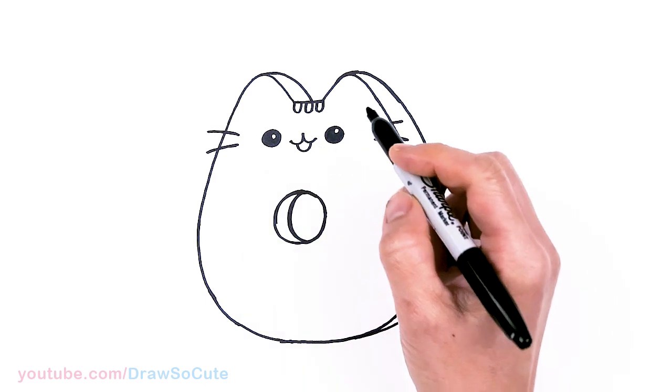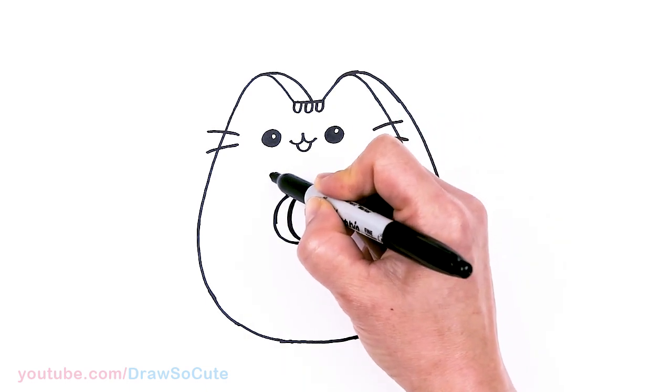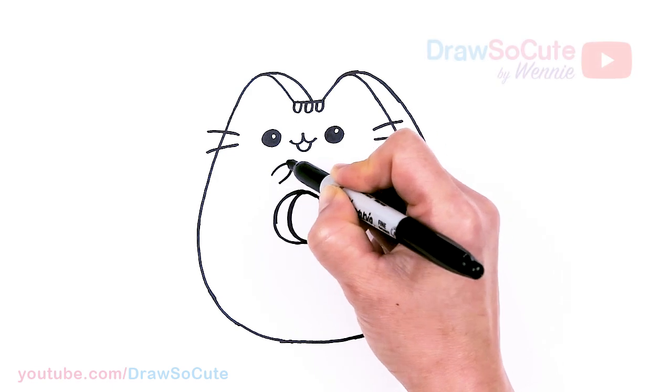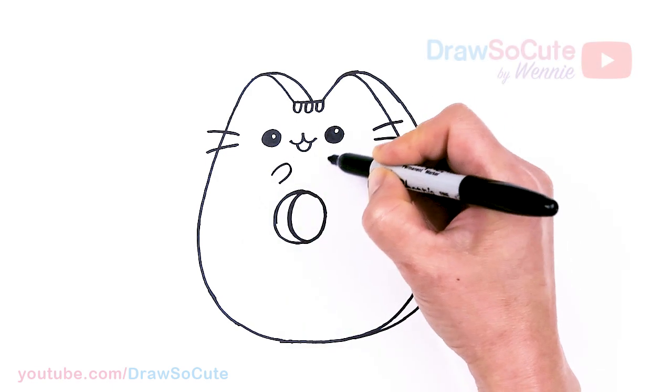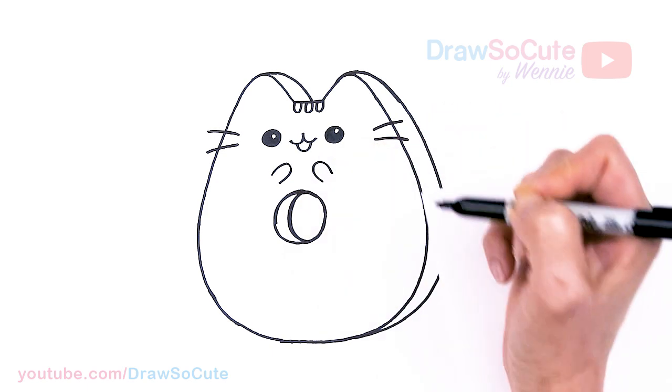From there, let's give Pusheen some hands. So right behind this area right here, I'm going to go and pop in a curve and one here as well. There.